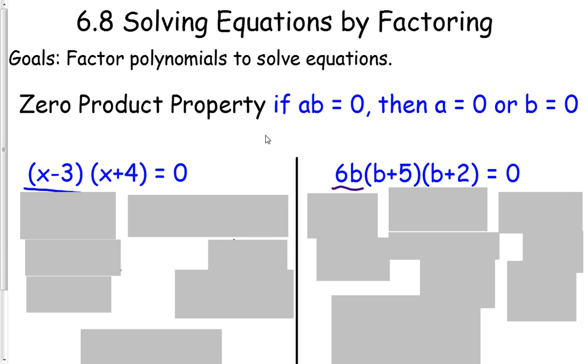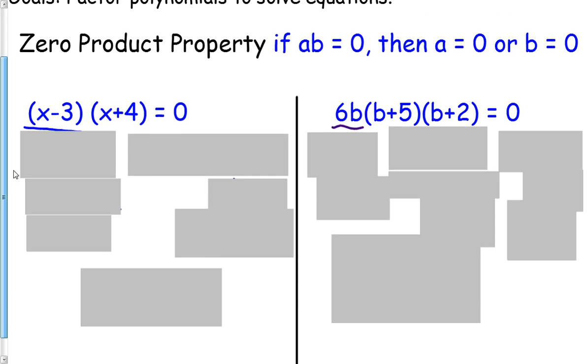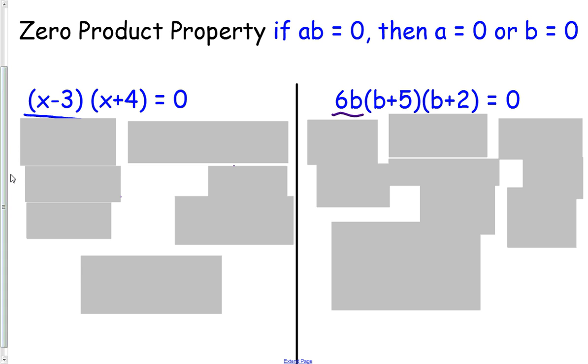And what this says is if two numbers multiply to equal zero, then one of those two numbers equals zero. If a times b equals zero, then either a equals zero or b equals zero. In terms of variables for this, that means when we solve a problem, our answers are multiple options that will get us to zero.